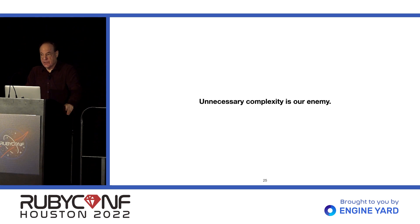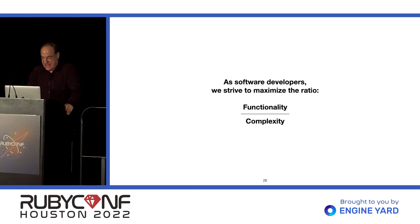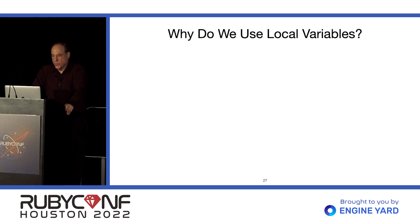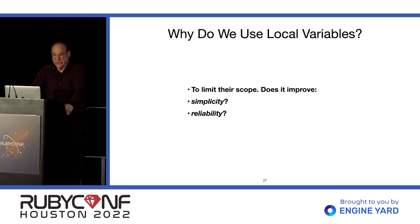Unnecessary complexity is our enemy. You don't want a co-worker who's going to make something overly complex because it's going to be harder to understand and modify. As software developers, we strive to maximize the ratio of functionality over complexity — maximize the functionality we give our users, and minimize the complexity we'll need to deal with as time goes on. Why do we use local variables? To limit their scope. Does it improve simplicity, reliability, readability? Yes.